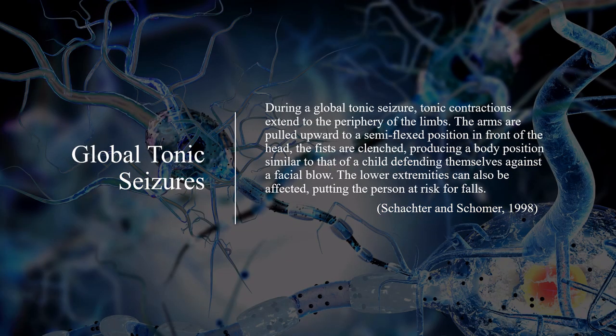During a global tonic seizure, tonic contractions extend to the periphery of the limbs. The arms are pulled upward to a semi-flexed position in front of the head. The fists are clenched, producing a body position similar to that of a child defending themselves against a facial blow. The lower extremities can also be affected, putting the person at risk for falls.